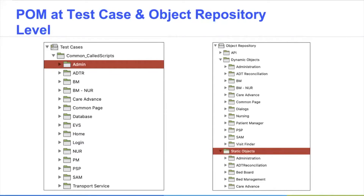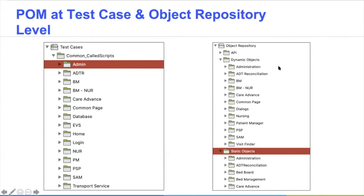For the object repository it's the same, but it has something more advanced. If you want to use dynamic objects, you store them under the dynamic object folder; if you are using static objects, you store them under the static object folder. It still strictly applies the Page Object Model — you can see it here, it's still based on the page of the project. This is my mock project, so don't worry about the page names.